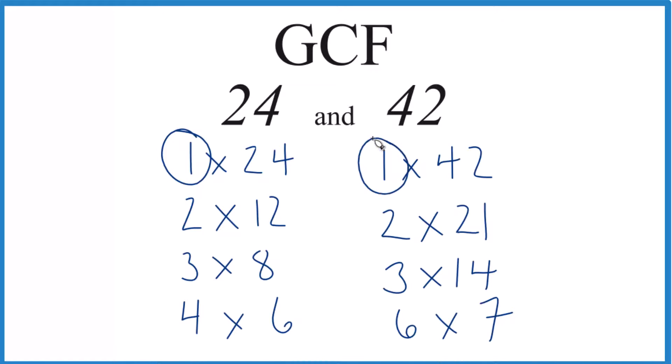1 goes into 24 and 42 evenly, so does 2. Looks like 3 goes into both numbers. Does 4? No, but 6 does, and it looks like 6 is the greatest common factor between 24 and 42.